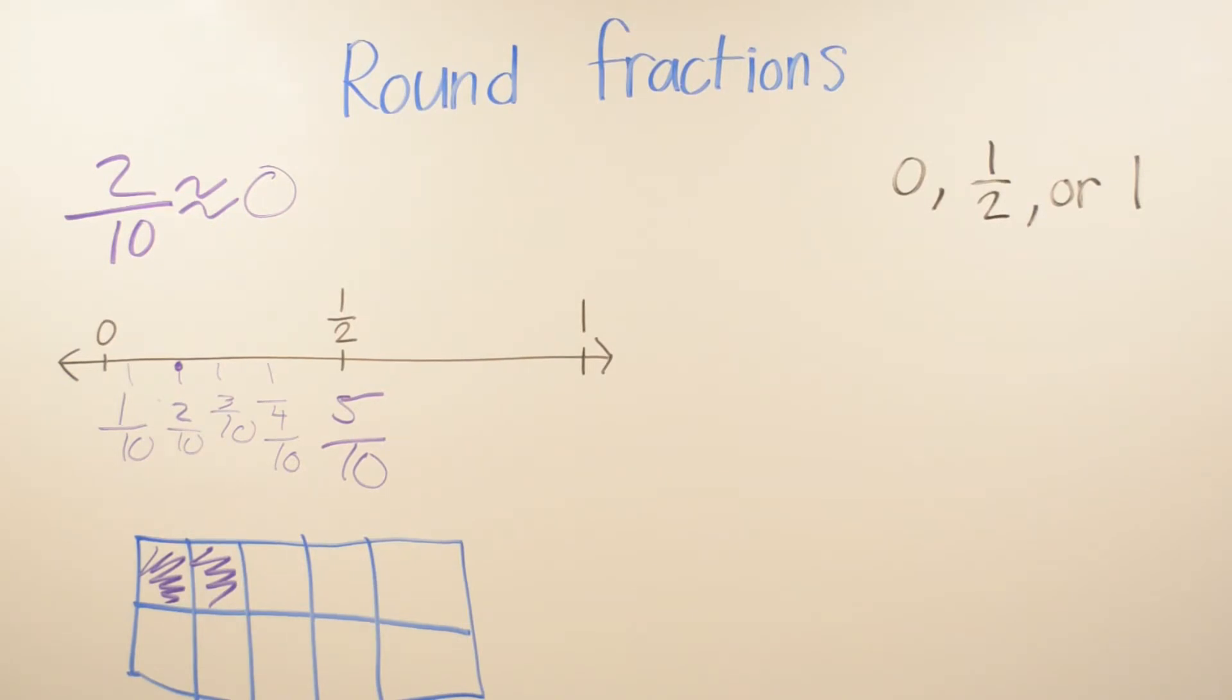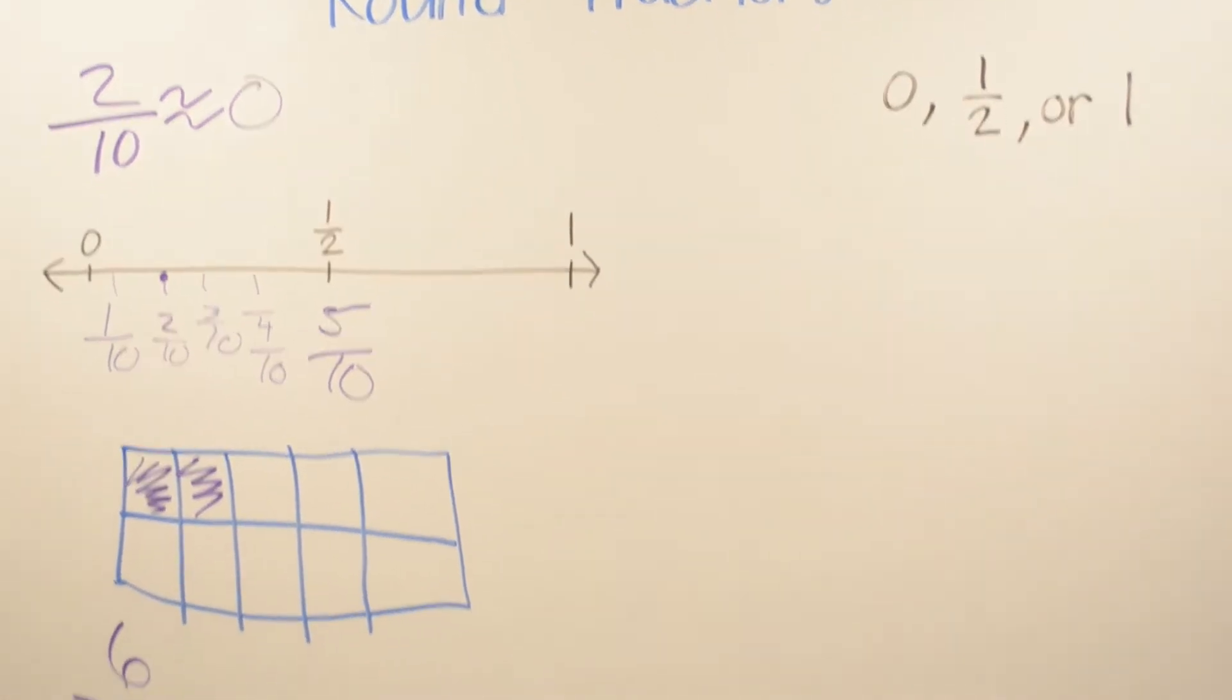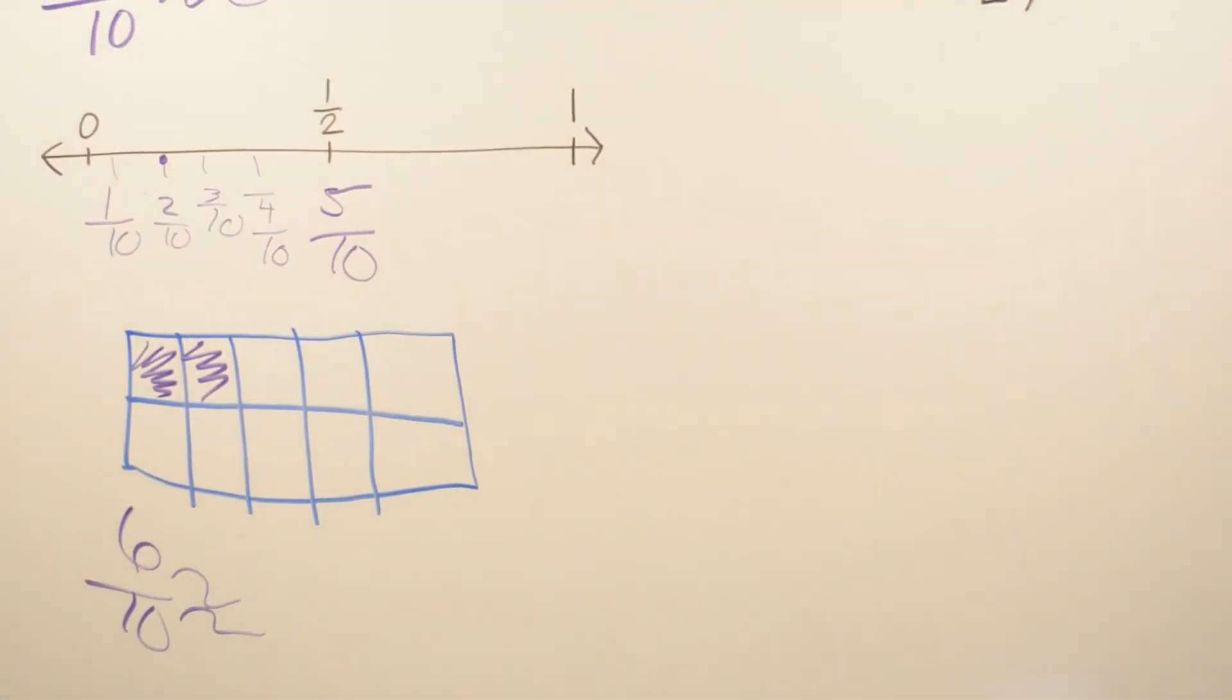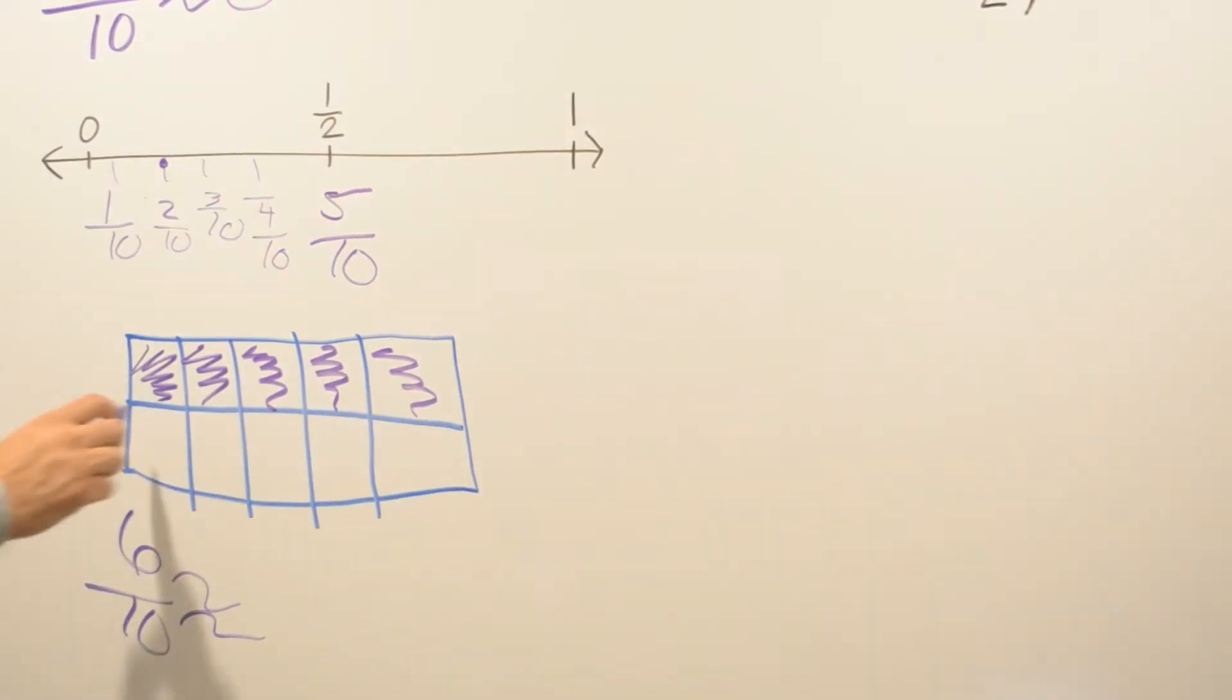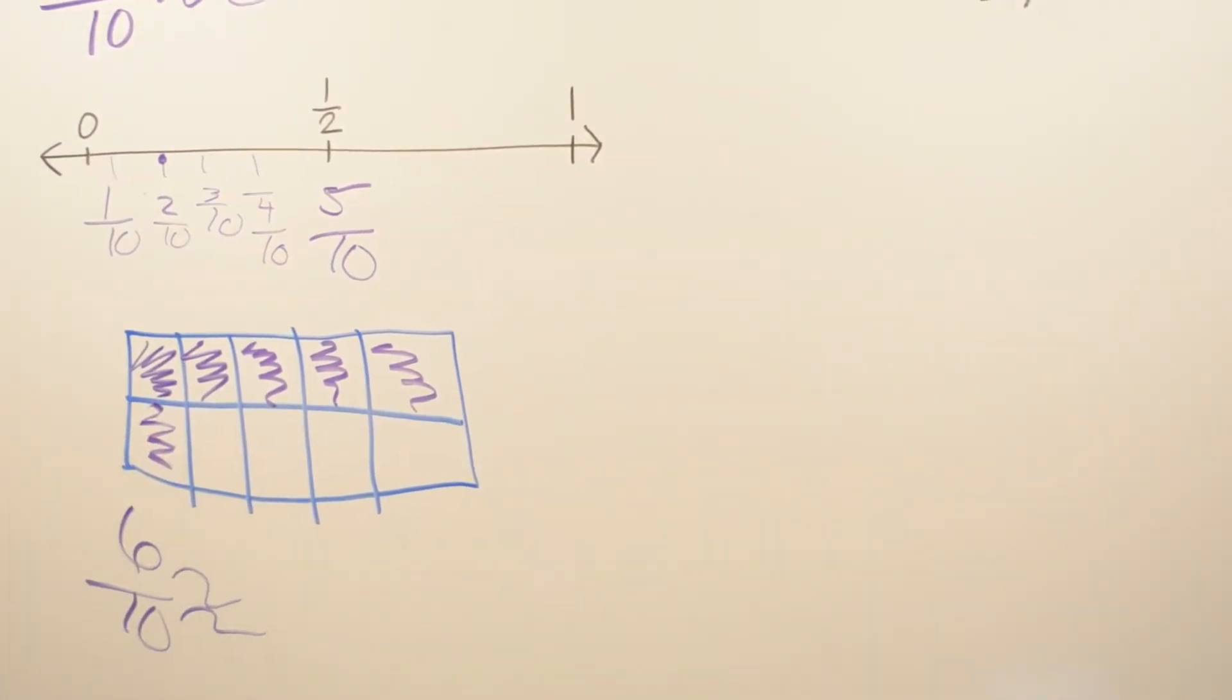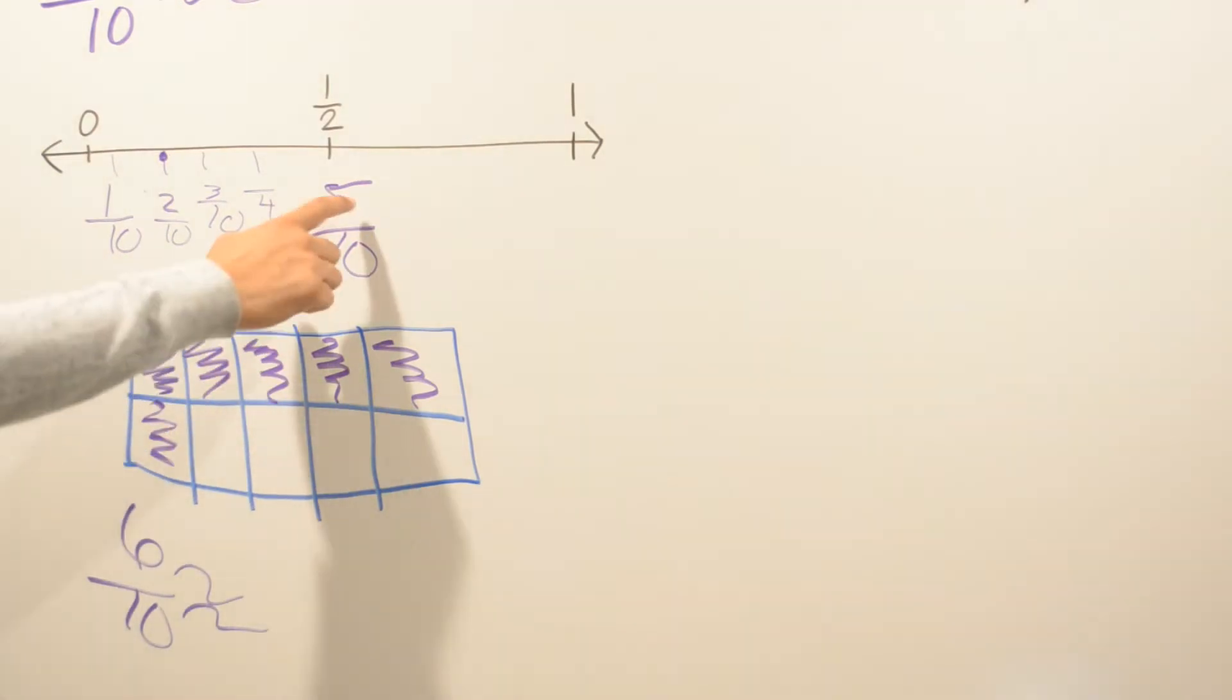Now, if I was to say, let's round 6 tenths. We're going to go ahead and just shade 6 boxes: 4 and 5 and 6. We know right away that half is 5. So we know we just put one more box shaded, so we know right away we're going to be closer to half rather than 1 or 0.